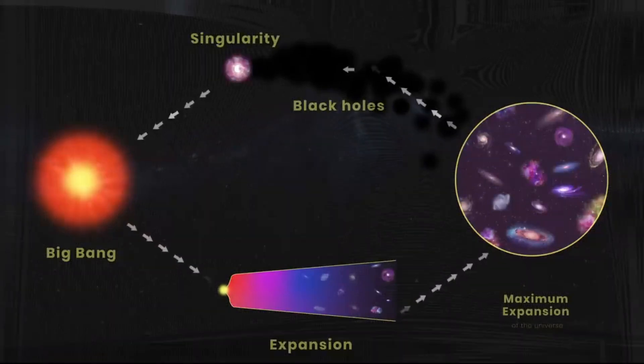But when observed on a larger scale, these irregularities average out, resulting in a smoother structure. This overall uniformity suggests that the universe is flat on a grand scale.